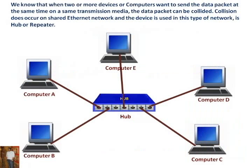We know that when two or more devices or computers want to send the data packet at the same time on the same transmission media, the data packet can be collided. Collision does occur on a shared Ethernet network, and the devices used in this type of network are hub or repeater.